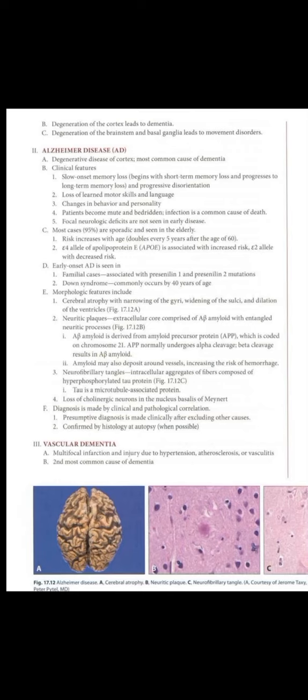Amyloid may also deposit around vessels, increasing the risk of hemorrhage. Neurofibrillary tangles are intracellular aggregates of fibers composed of hyperphosphorylated tau protein. Tau is a microtubule-associated protein, and loss of cholinergic neurons is also a key feature.